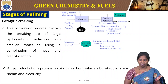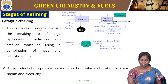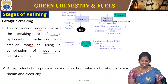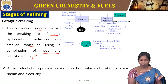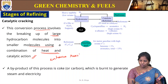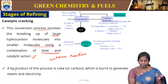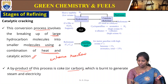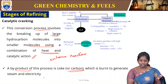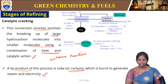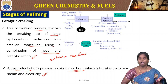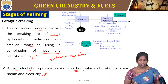The next stage is catalytic cracking. This conversion process involves breaking large hydrocarbons into smaller molecules using a combination of heat and catalytic action. The catalyst is used to enhance the reaction and form products more easily and feasibly. A byproduct of this process is coke, which is burned to generate steam and electricity.